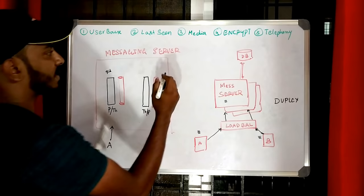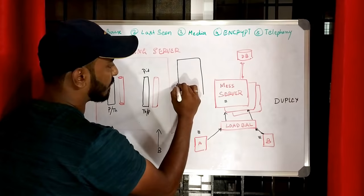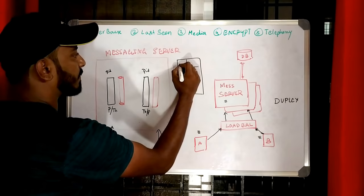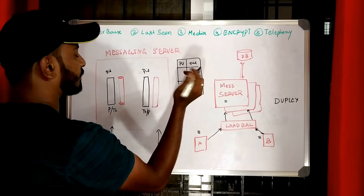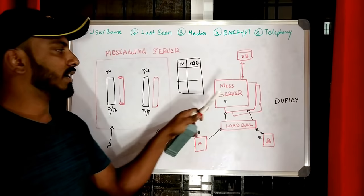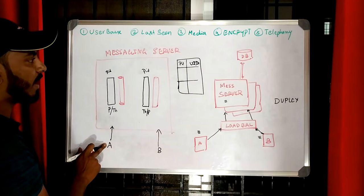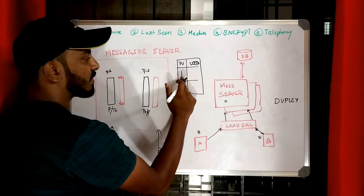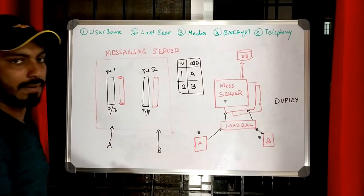When a connection comes from client B, a new thread or process is created to handle messages for that client, along with its own queue acting as a message buffer. We add an entry in the DB with a table containing PID and UID. So when client A connects, a process is created with say PID 1 associated with user A; when client B connects, another process is created with PID 2 associated with user B.